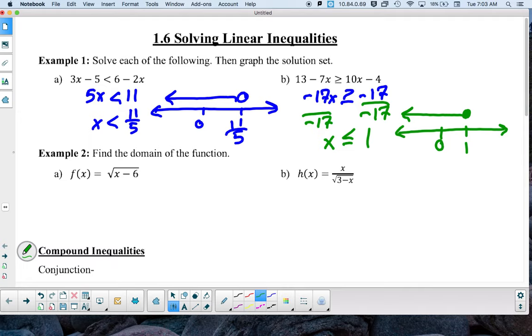Now if we were writing the domain of these, so this is just graphing. If we were writing the domain, the way that we would write a is this would be parentheses negative infinity all the way up to 11 over 5. And then if it's an open circle, it's going to have a parentheses, whereas in B, if it was a closed circle, this would be a bracket.